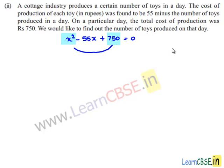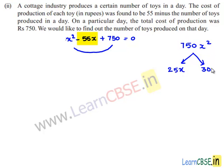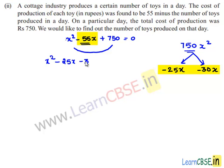The product of the first and last terms is 750x squared. We need two terms whose product equals 750x squared and sum equals minus 55x. Taking 25x and 30x: 25x times 30x is 750x squared and 25x plus 30x is 55x. Since we need minus 55x, we use minus 25x and minus 30x, which satisfy both conditions. So we replace minus 55x with minus 25x and minus 30x, plus 750 equals 0.